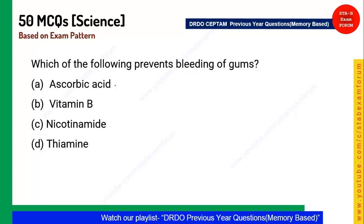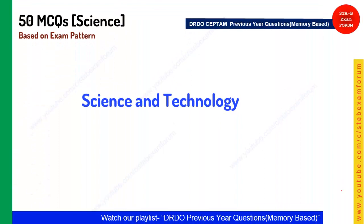Next question: Which vitamin prevents bleeding of gums? Vitamin C, also known as ascorbic acid, is used to prevent bleeding of gums. Option A is the correct answer.